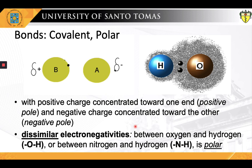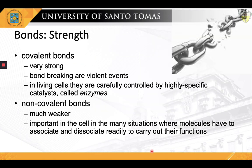The best examples of polar covalent bonds are the bonds between oxygen and hydrogen and between nitrogen and hydrogen. A further crucial property of any bond — covalent or non-covalent — is its strength. Bond strength is measured by the amount of energy that must be supplied to break that bond, often expressed in units of kilocalories per mole or kilojoules per mole. Typical covalent bonds are stronger than non-covalent bonds.